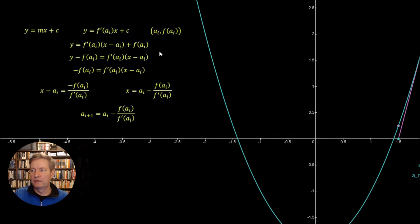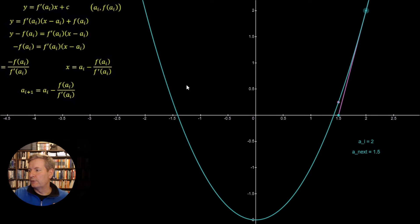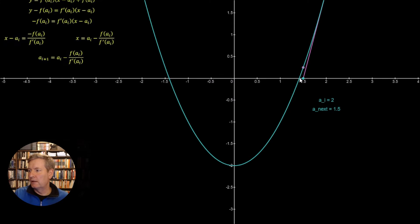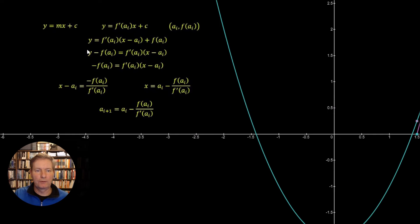Now all we need to do now is to note that whenever the value here of y is equal to 0, that's when we get the roots. So we can simply set this value here y as the value of 0 and we transpose the equation till we get this here. And then we can solve for the value of x. So we then transpose the equation again such that we get x equals ai minus f of ai upon f derivative of ai. Now this new value of x we can call it ai plus 1. So that's the new value. So this is the final little Newton-Raphson equation that we use in order to generate this approximation to the roots of our simple polynomial.